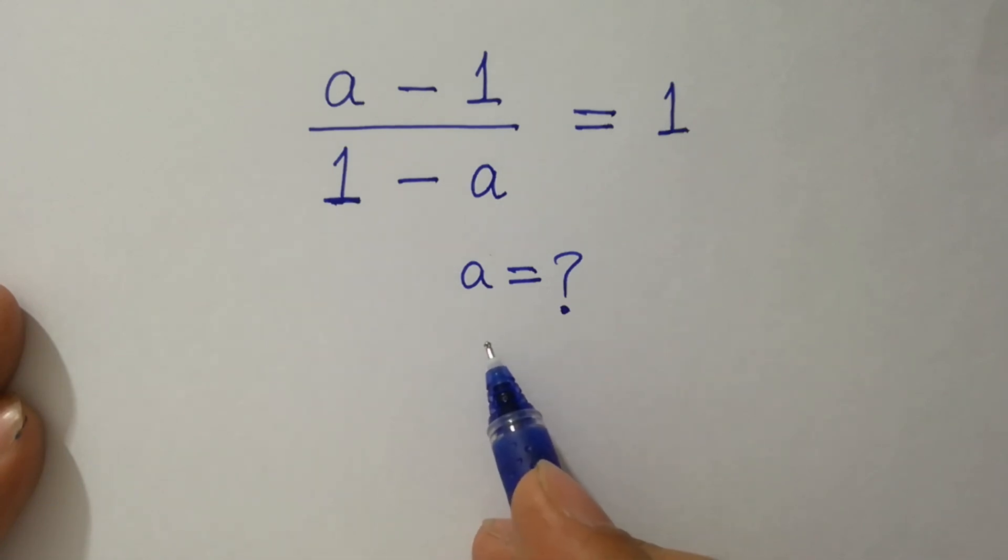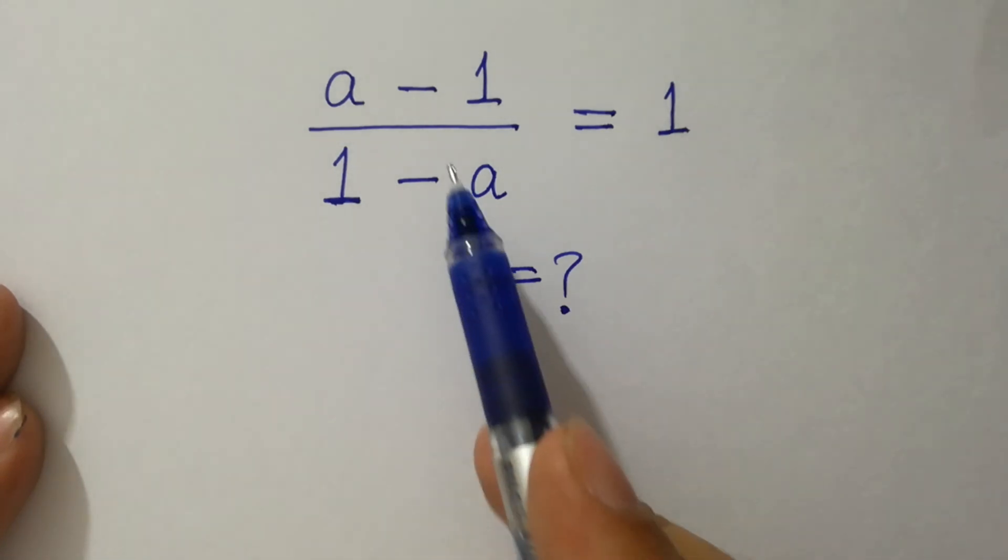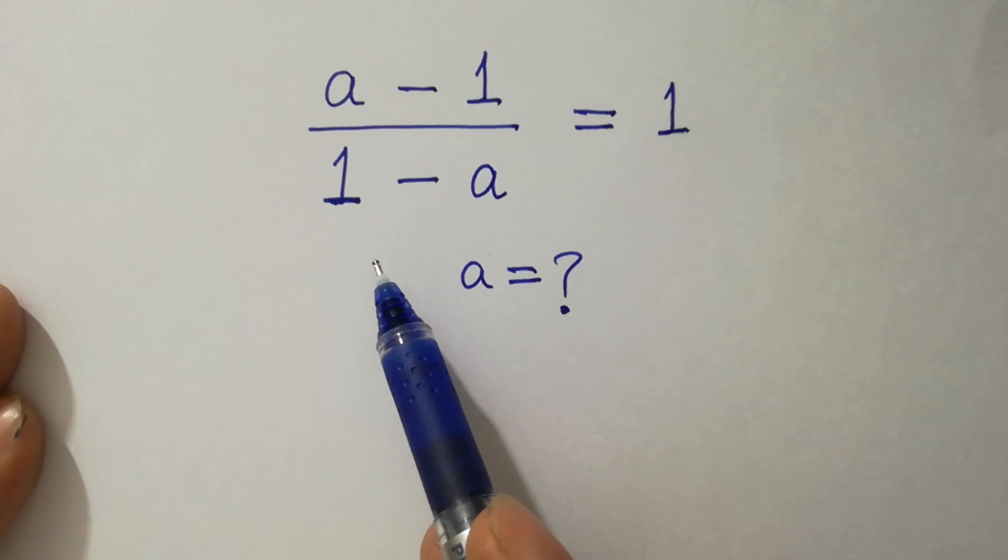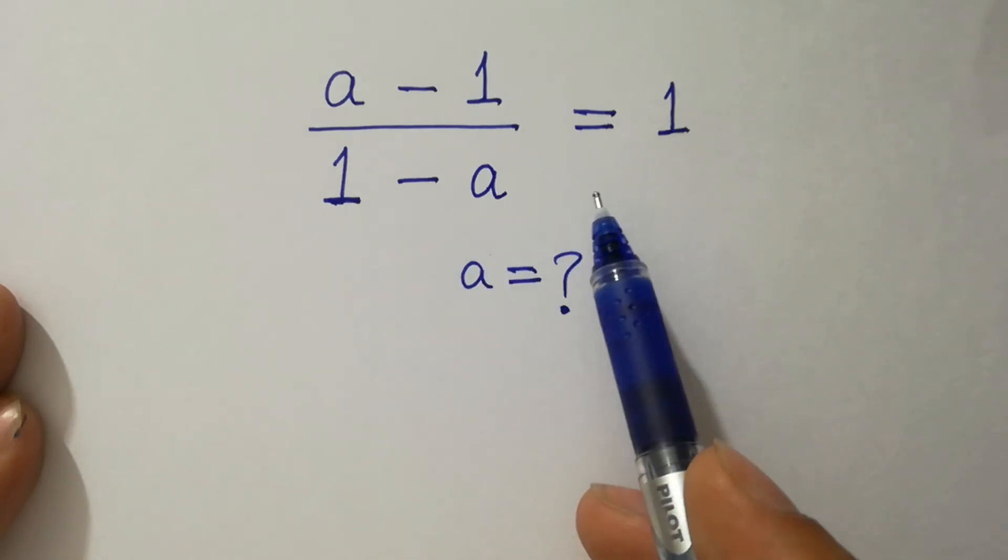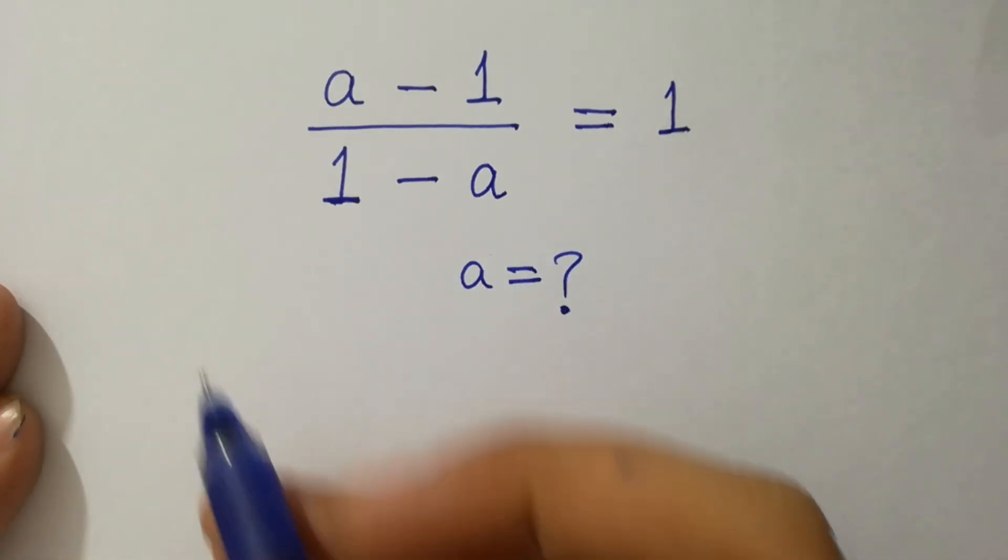Hello friends, find the value of a if (a minus 1) over (1 minus a) equals 1. Let's have a solution.